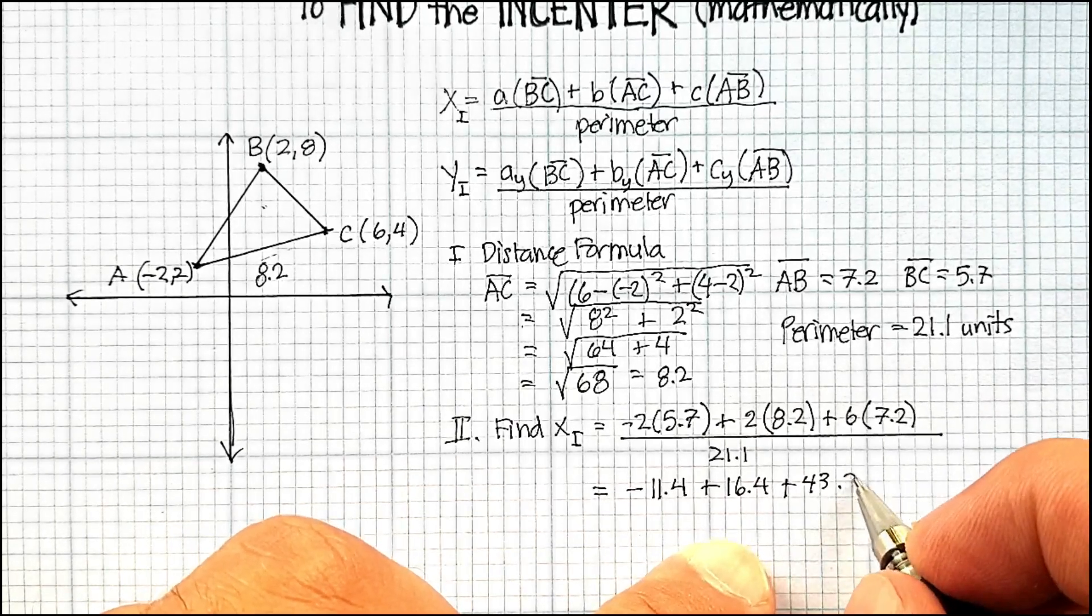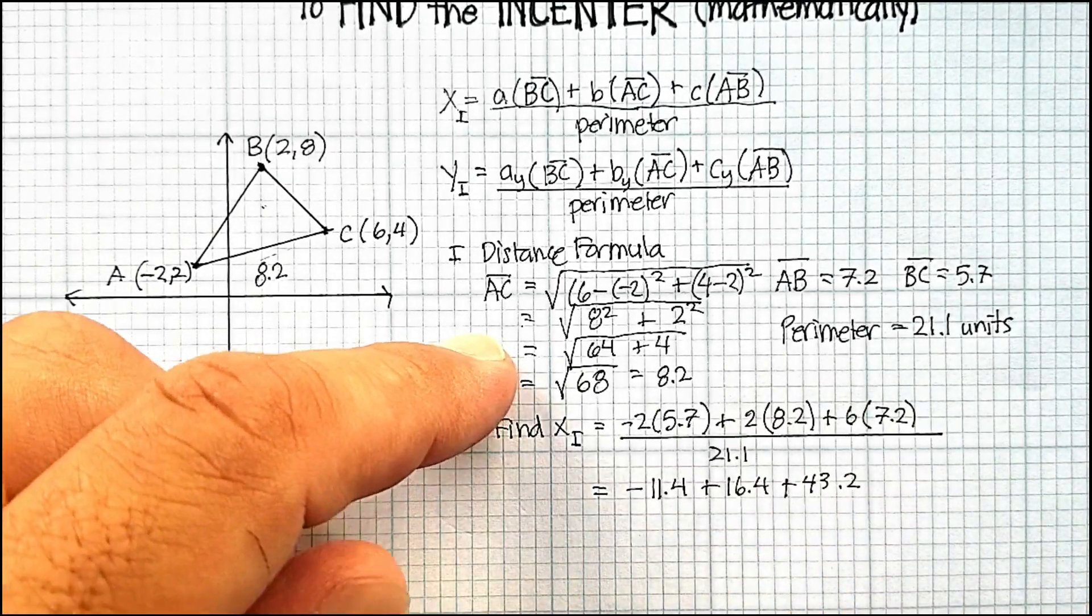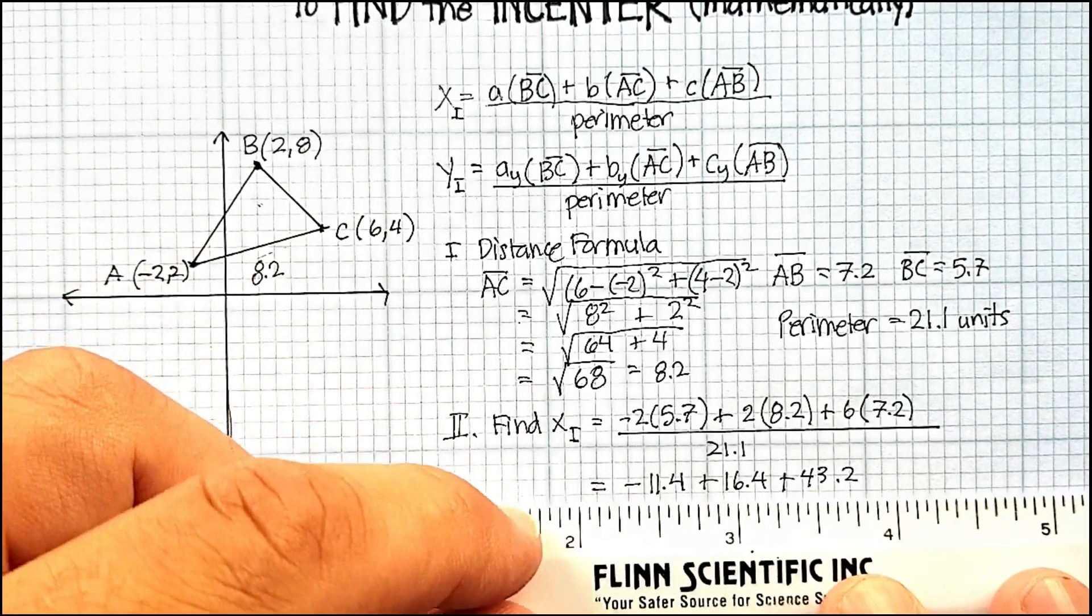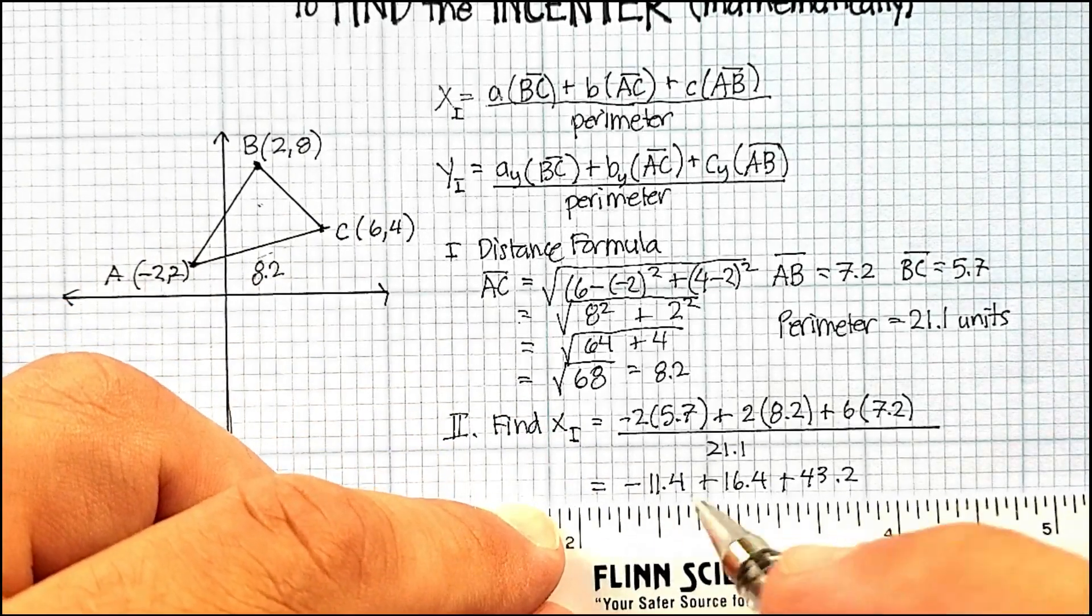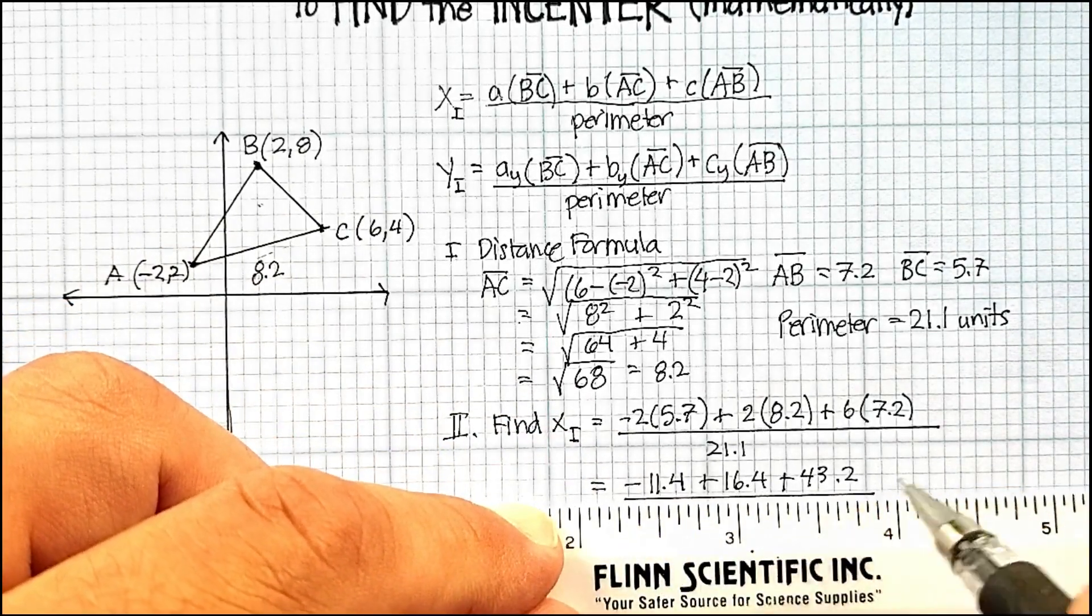That is a positive 43.2. Divide by 21. And again, I'm just going to do this quickly. You can do the calculations on your calculator.